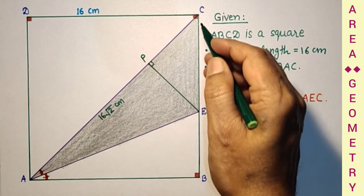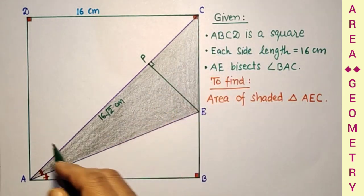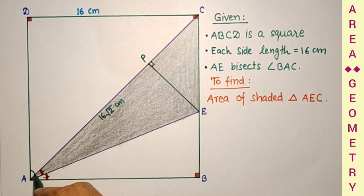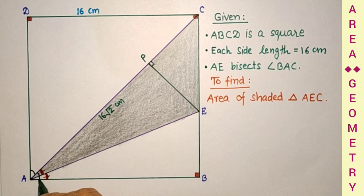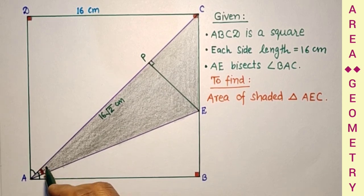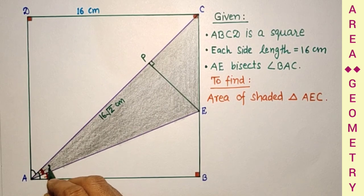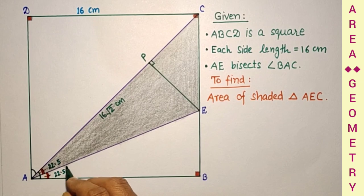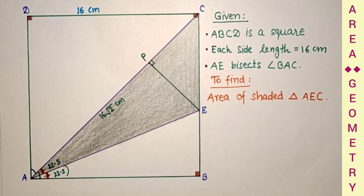Now this diagonal bisects the angle of the square. This is 90, so this is 45. But this 45 is also bisected. So this is 45 by 2, 45 by 2. This is 22.5, and this also 22.5 degree.